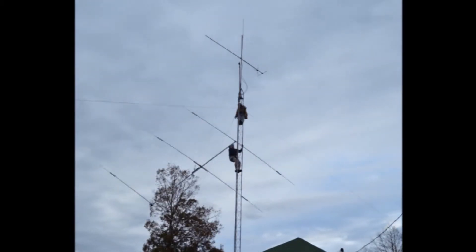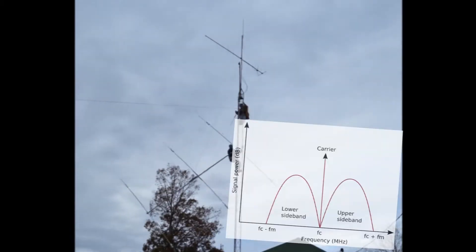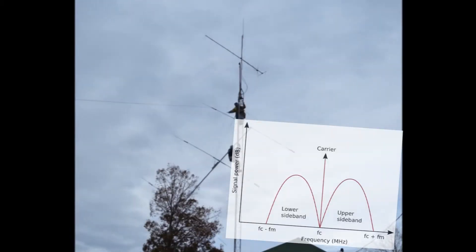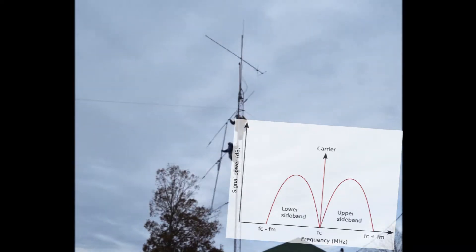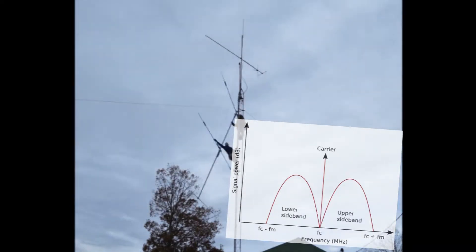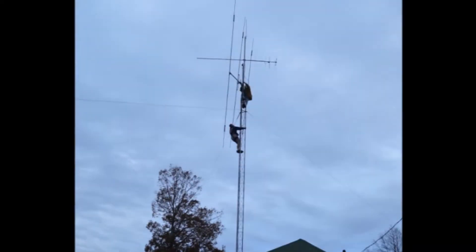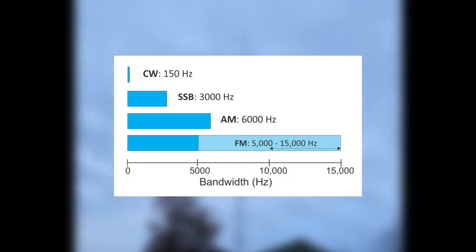In amateur radio, single sideband, or SSB, is used in HF communication due to the fact that it takes up less bandwidth than amplitude modulation. It's roughly 3kHz versus 6kHz for those interested.